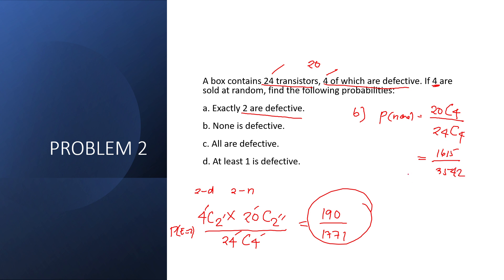Letter C: all are defective. We need to get four transistors and there are exactly four defective ones, so the formula is 4 combination 4 over 24 combination 4.